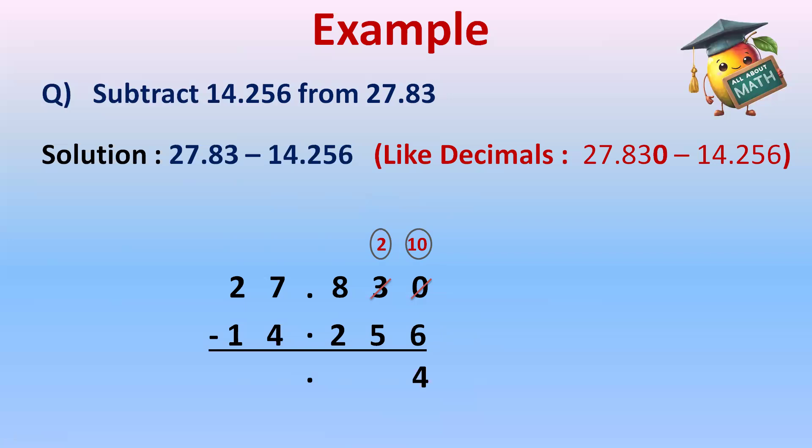2 minus 5 is not possible. 2 will again borrow 1 from 8. It will become 7 and this 2 will become 12.